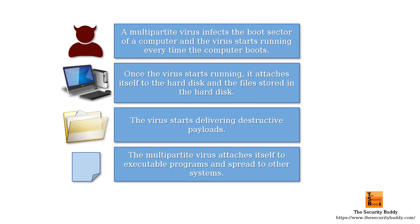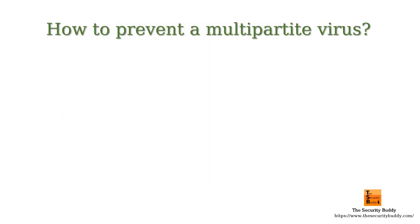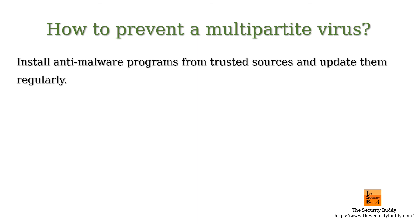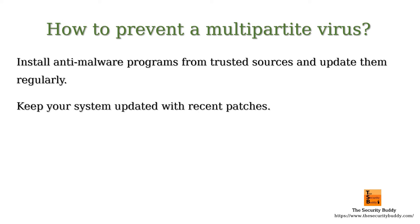How to prevent a multipartite virus? A couple of pieces of advice always help. Install anti-malware programs from trusted sources and update them regularly. Keep your operating system, browser, and other commonly used software updated with recent patches. More updated software has fewer known security vulnerabilities.